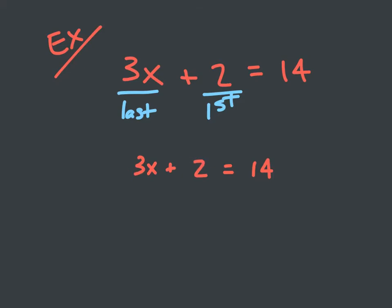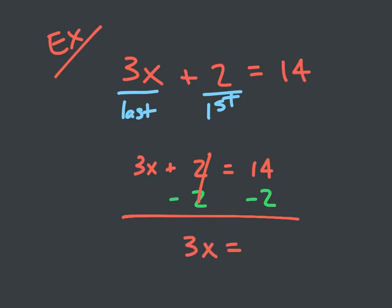Think of what we talked about in solving one-step equations. If I'm moving this two over, I want to use my inverse operation. Since I'm adding two, the opposite of adding two is subtracting two. So I'm going to subtract two from both sides. As a result, two minus two cancels out, and I've got 3x is equal to 14 minus two, which is 12.